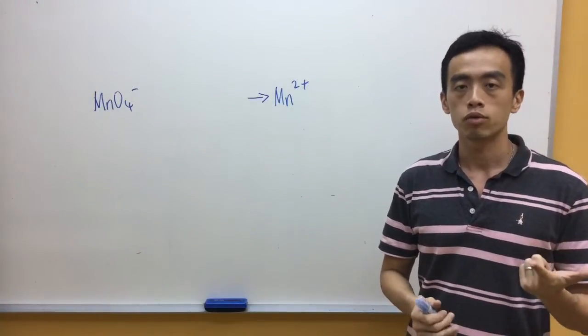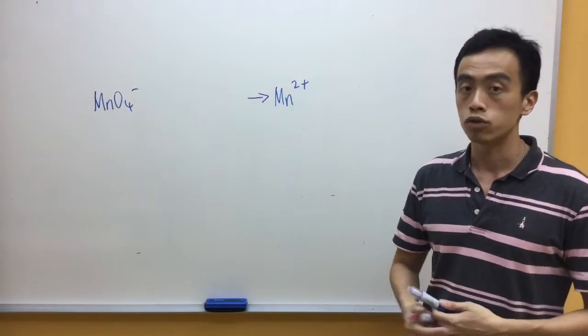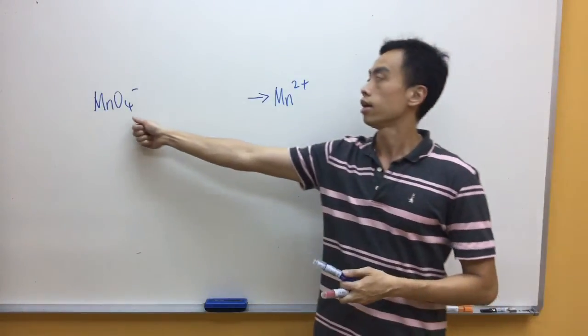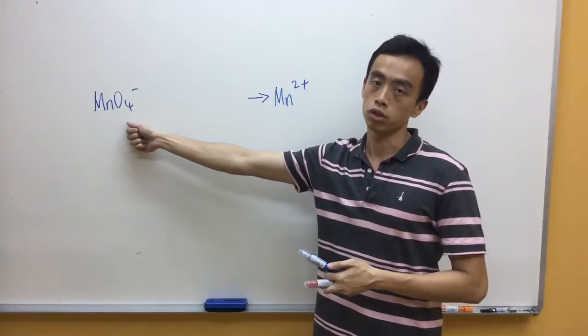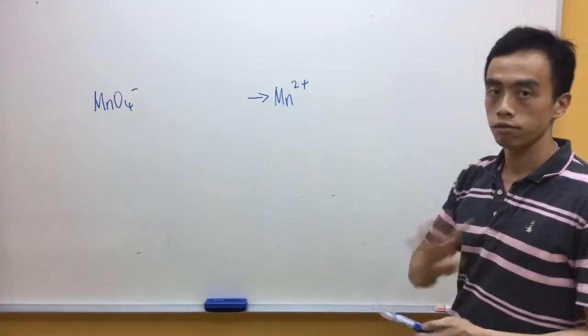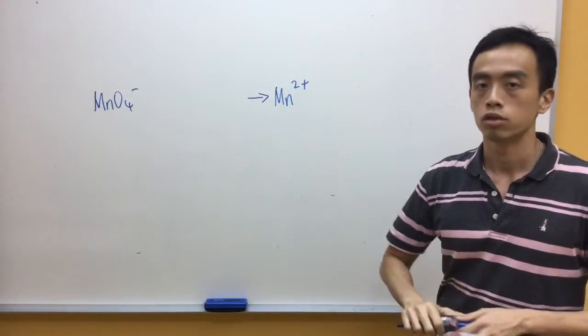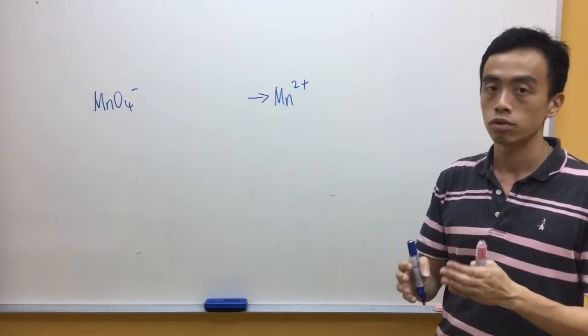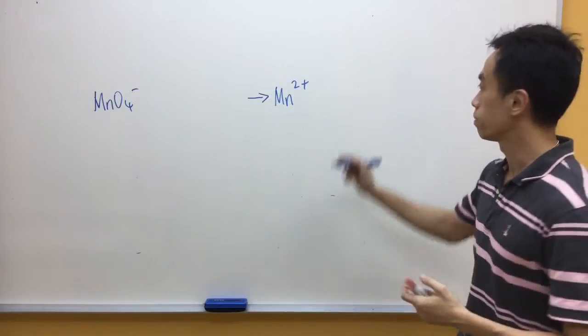The second step is to balance oxygen using water. On the left-hand side I have 4 oxygen, so on the right-hand side I need to add 4 oxygen — I need to balance it with 4 water.